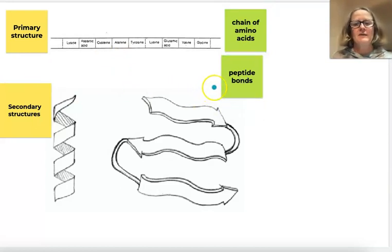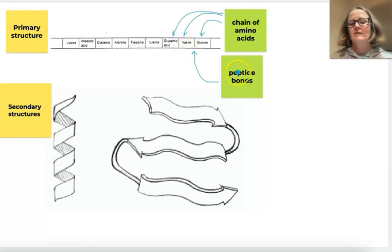They're joined together by peptide bonds, so the peptide bonds are these bits in between each amino acid. There are lots of different amino acids - there's about 20 different amino acids. There's a few of them named here, and the amino acids are coded for by the sequence of bases in the DNA. The first thing when we're building a protein is to get the chain of amino acids.